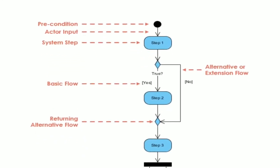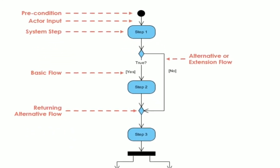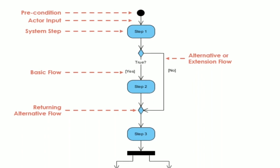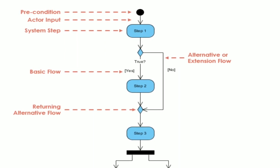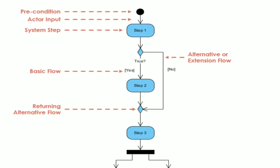Next, you can see the alternative or extension flow, also called a loop. Then basic flow, simple line. Then returning alternative flow. Step 3 is there, then fork is there, finally join is there.